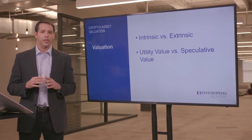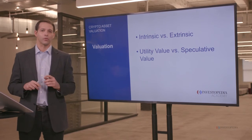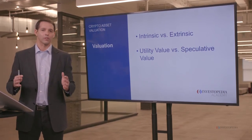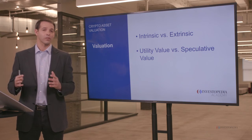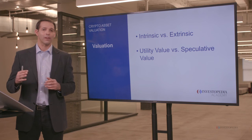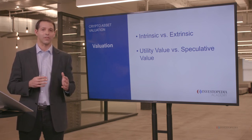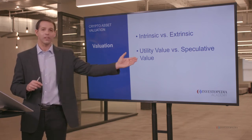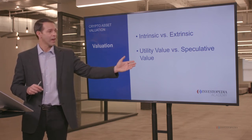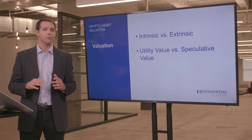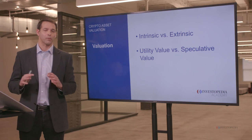Think about this for a minute. Let's say you have a decentralized file storage system, and there's only $10 million worth of decentralized file storage being used right now. However, the market might value your crypto asset at $500 million, which is 50 times how much is really used in the world. So in this case, the utility value is only $10 million, and the speculative value would be $490 million.